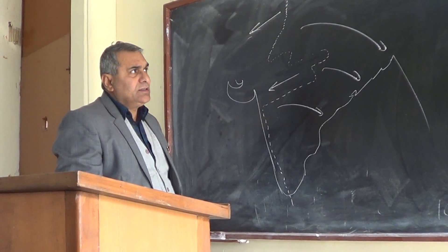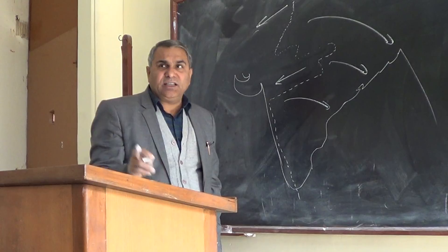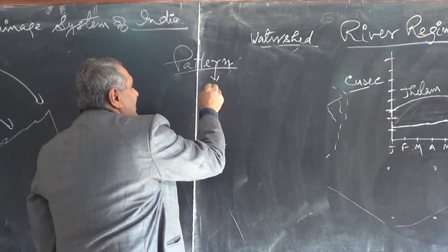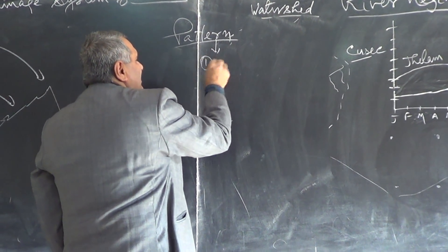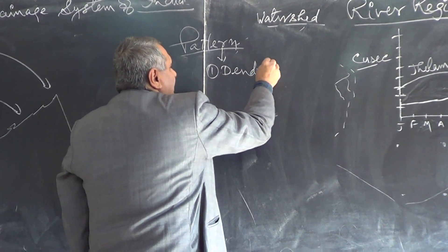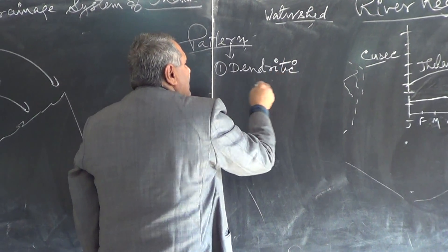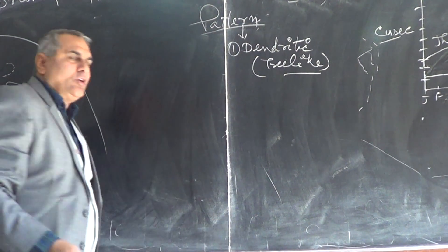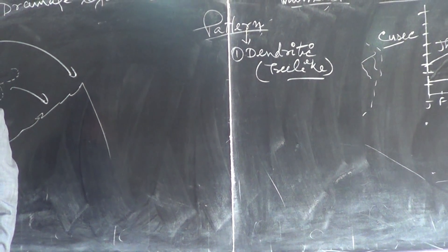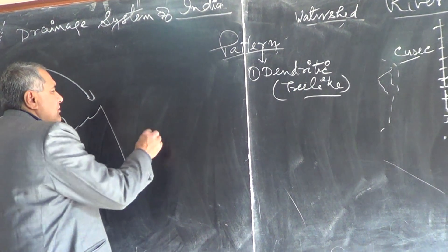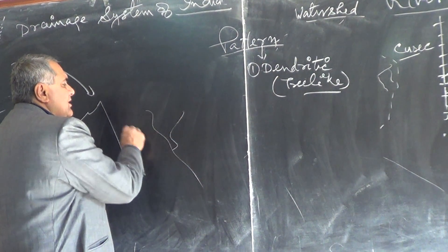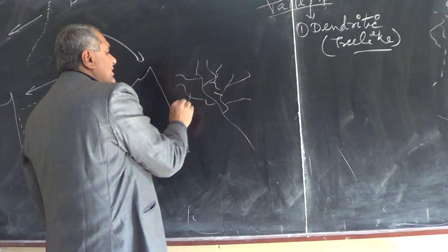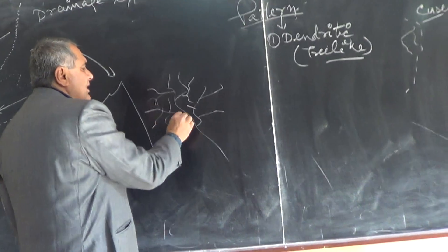Before discussing India, let me discuss the drainage patterns. The first is the dendritic pattern. Dendritic means tree-like. When the surface is generally uniformly weathered, the river develops a tree-like pattern.